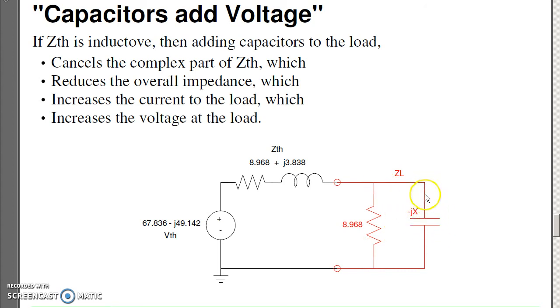What's happening is capacitors have a negative reactance. Inductances for motors have a plus reactance. By adding capacitors, I'm canceling this. By canceling it, I increase the current, which increases the voltage.